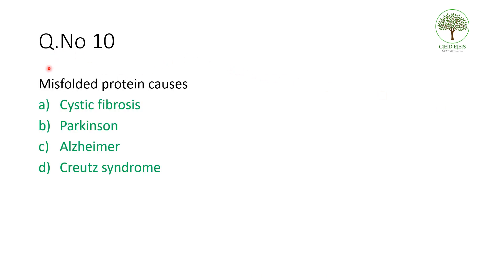Tenth question: misfolded proteins cause which diseases? There may be multiple options. Misfolded proteins cause neurodegenerative diseases including cystic fibrosis, Parkinson's, Alzheimer's, Creutzfeldt-Jakob syndrome, Hutchinson's disease, and prion disease. All are misfolded protein diseases.